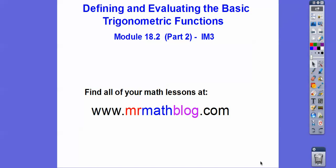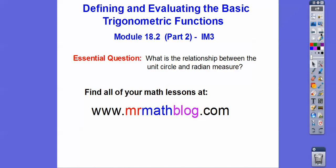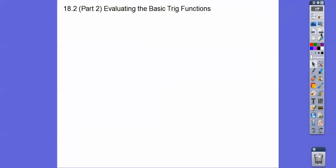Hey folks, here we're going to do our second part of defining and evaluating the basic trig functions. We talked a lot about the angles and stuff, so let's keep going. What's the relationship between the unit circle and radian measures and the angles?